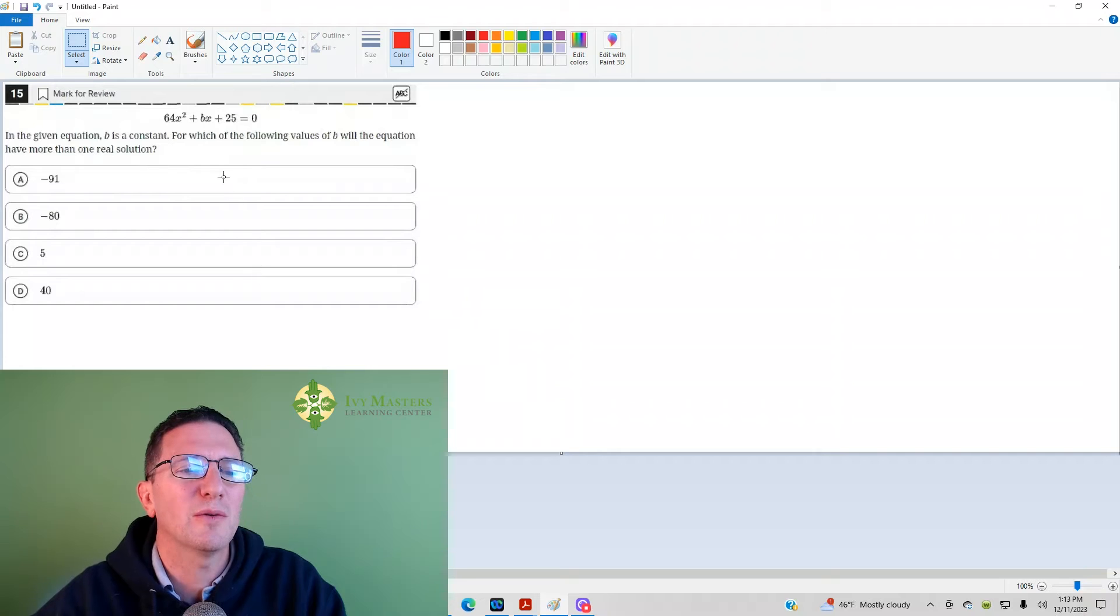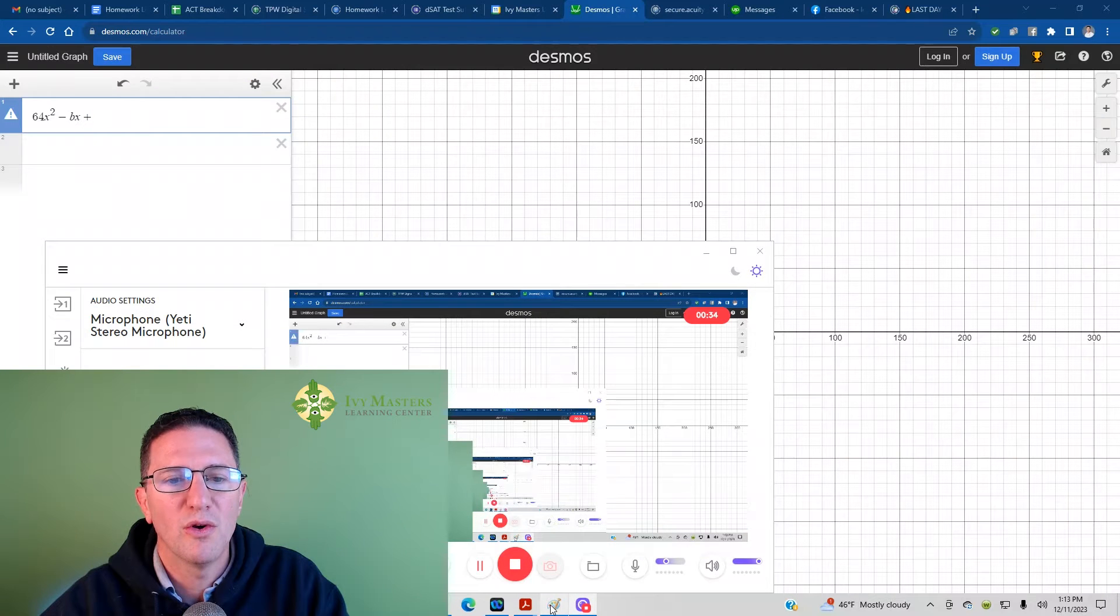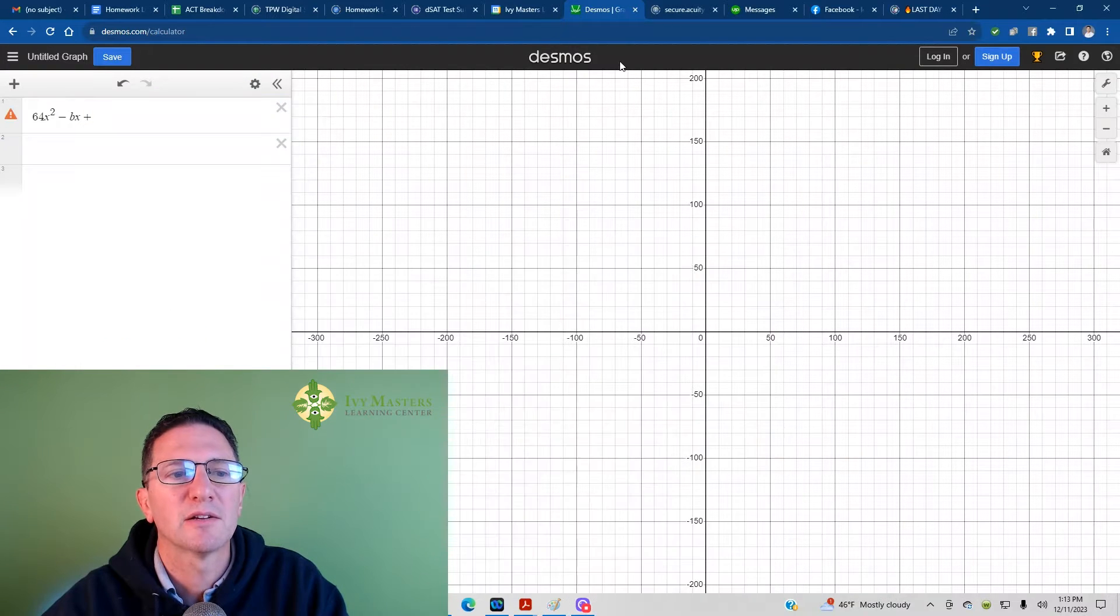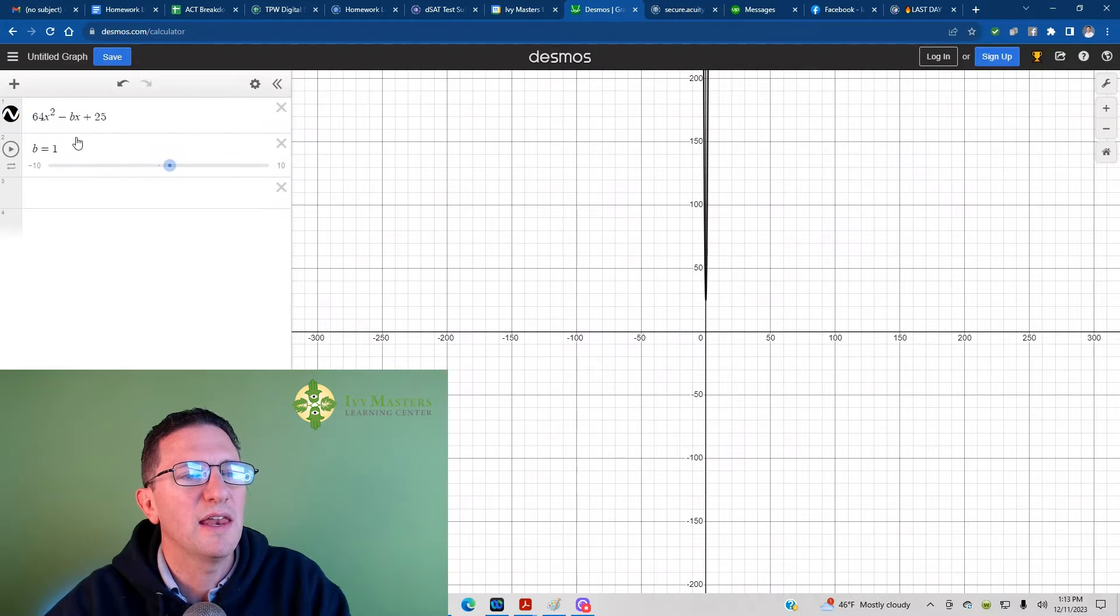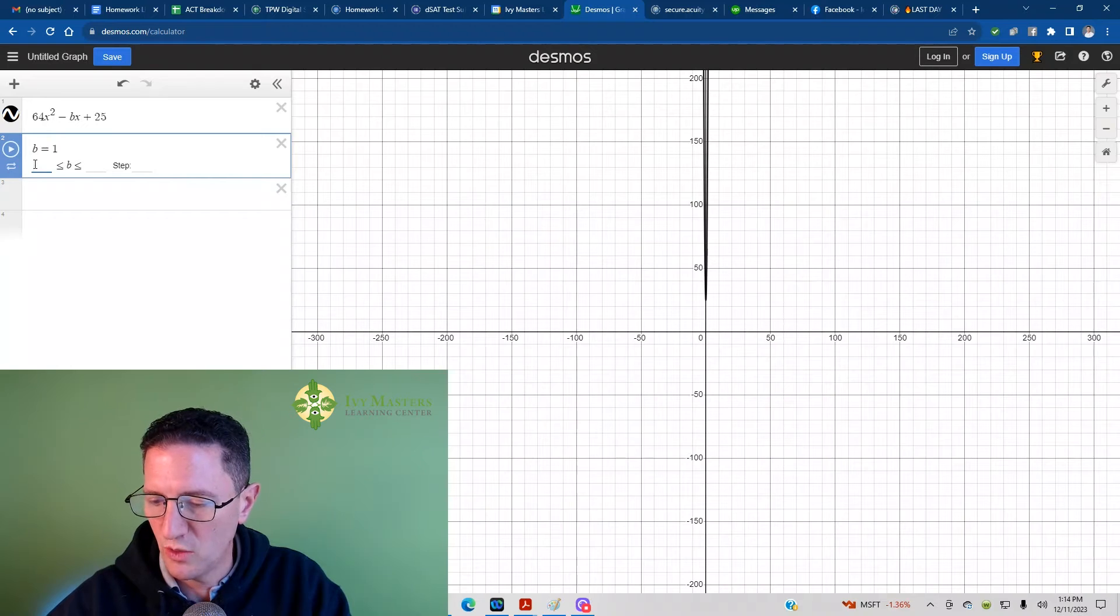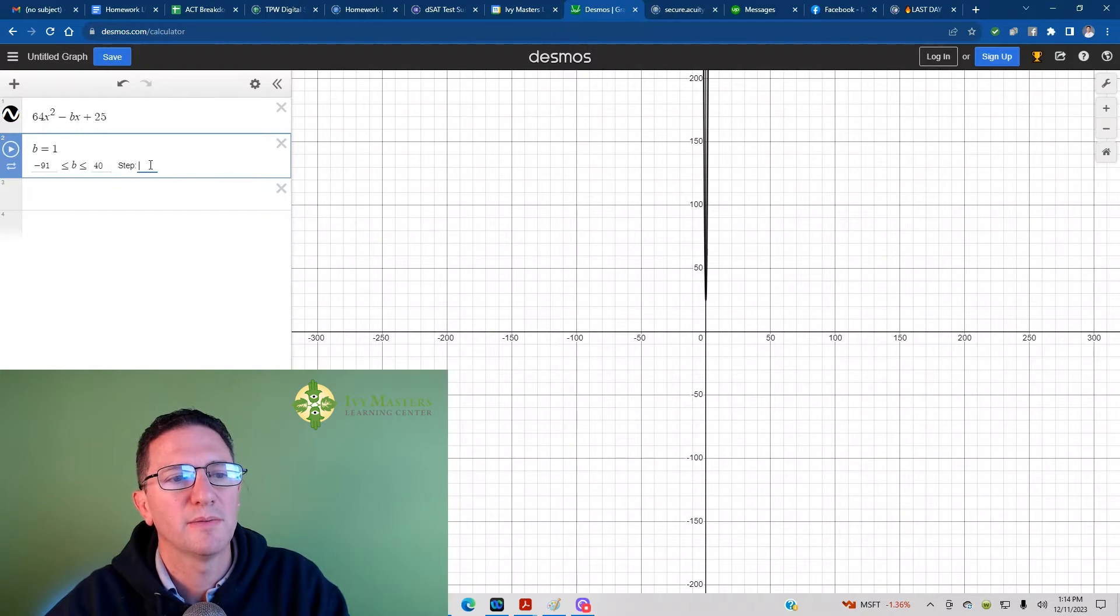Honestly, the easiest way to do this is to plug it into Desmos. You've got your 64x squared plus Bx plus 25 there, and plugging it right into Desmos. Finish plugging it in plus 25, it gives you this option to add a slider. The options for B were anywhere between negative 91 and positive 40, and we'll just make this step by 1.